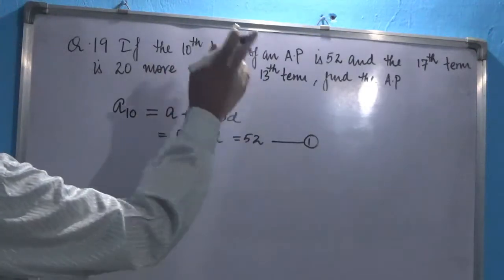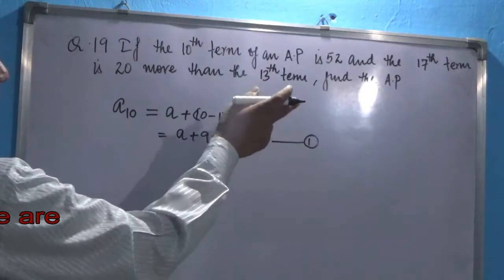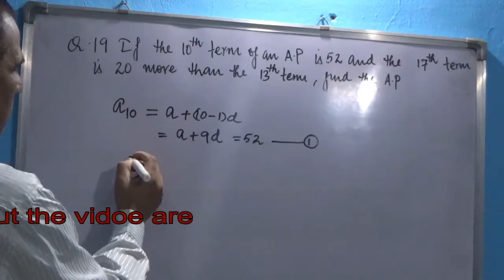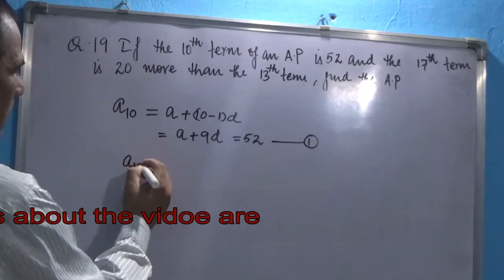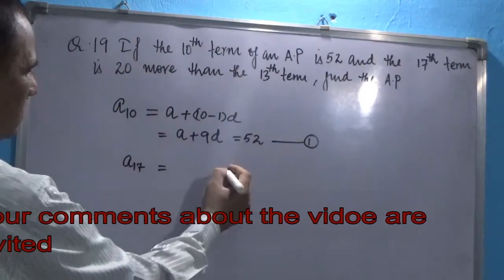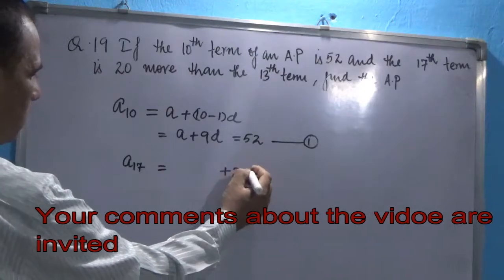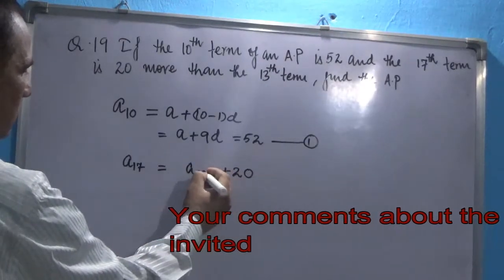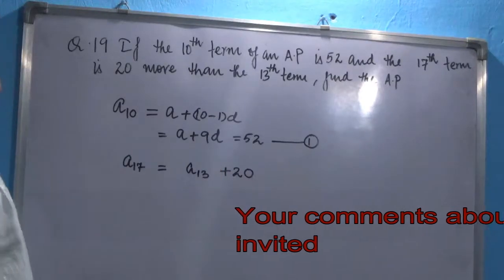Now let's consider the second condition. Here they say that the 17th term, which is nothing but A17, is 20 more than the 13th term, which means the 13th term plus 20.